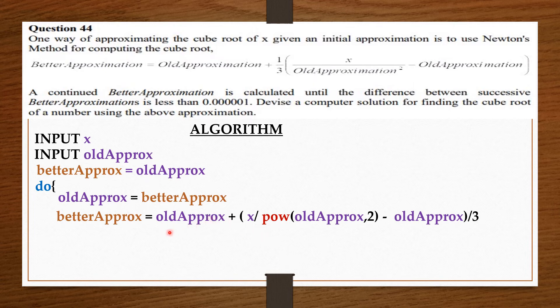Give the betterApprox back to oldApprox, put it into the formula, get a betterApprox. We keep doing this in a loop which will keep doing this. Now as it's doing this it will be checking.